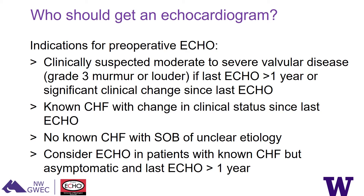These are recently changed guidelines about who should get an echocardiogram before surgery. Patients with clinically suspected moderate to severe valvular disease — grade 3 murmur or louder — if they've had an echo more than a year ago or have had significant clinical or physical exam changes since their last echo, should get another one. Patients with known CHF with any change in clinical status since their last echo, and patients without known CHF with shortness of breath of unclear etiology should also get one. A softer indication: patients with known CHF who are asymptomatic but whose last echo was more than a year ago should be considered for echocardiography.